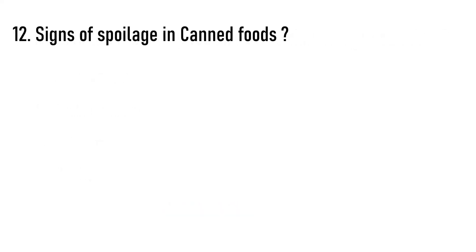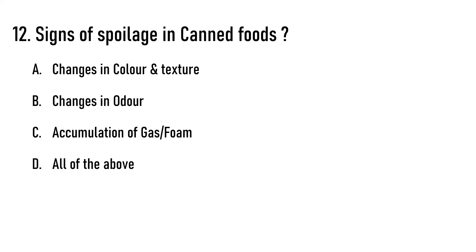Next question: What are the signs of spoilage in canned foods? Options are: A) changes in color and texture, B) changes in color, C) accumulation of gas or foam, D) all of the above. The correct answer is all of the above.